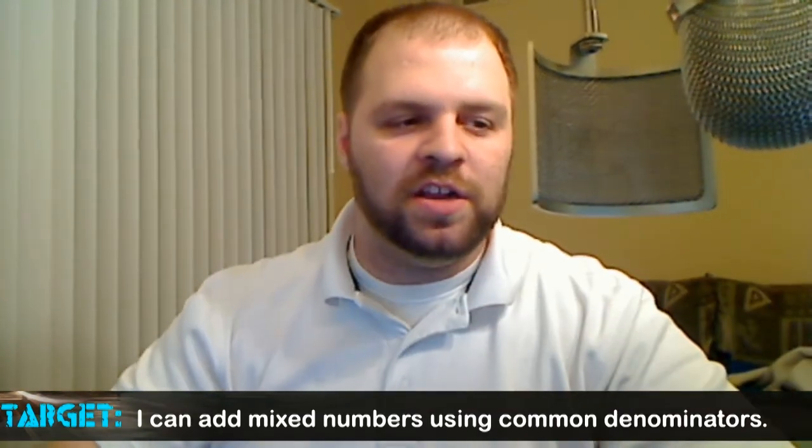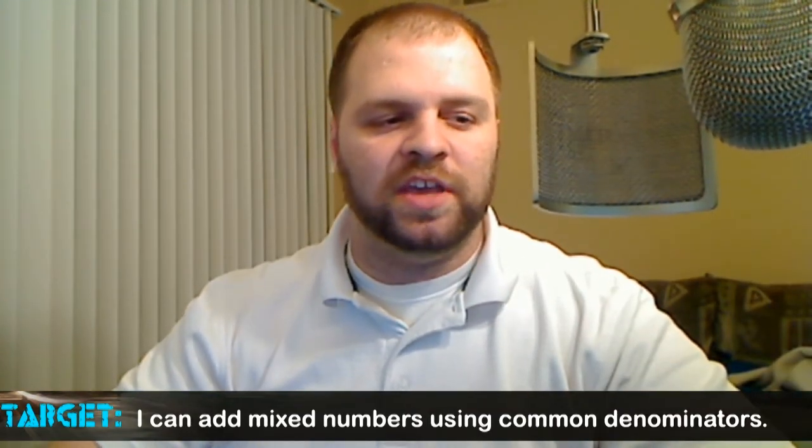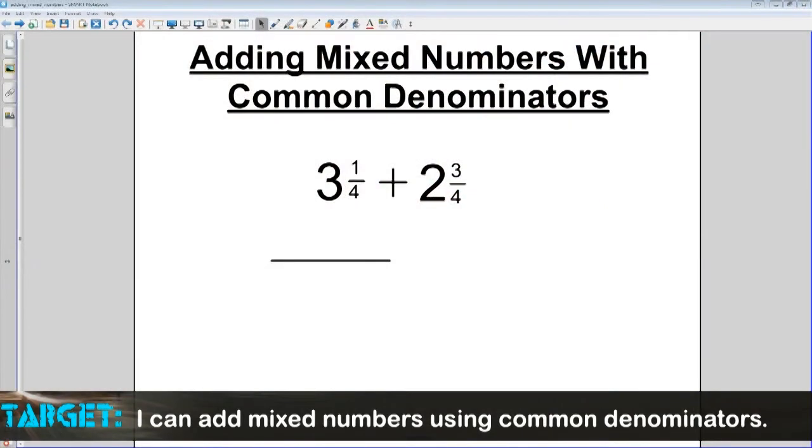So let's go ahead and get started here, and the first thing we're going to look at is adding a mixed number with common denominators. Now as you can see here, we have three and one-fourth plus two and three-fourths. If you look at our fractions, they have common denominators, four and four. Very simple work, boys and girls. Take the second fraction, line it underneath, makes everything easier for you.